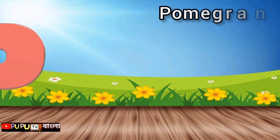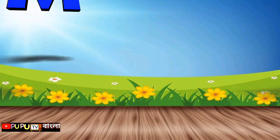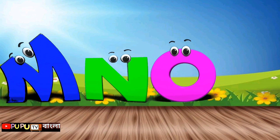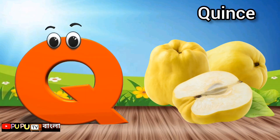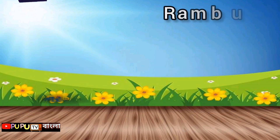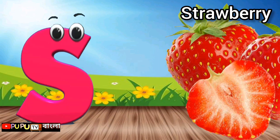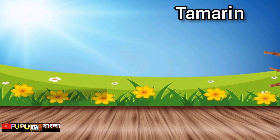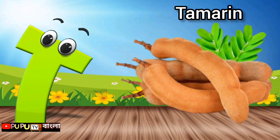P is for Pomegranate, P-P-Pomegranate. Q is for Quince, Q-Q-Quince. R is for Rambutan, R-Rambutan. S is for Strawberry, S-S-Strawberry. T is for Tamarind, T-T-Tamarind.